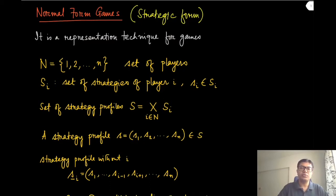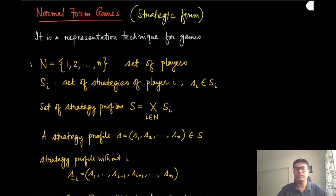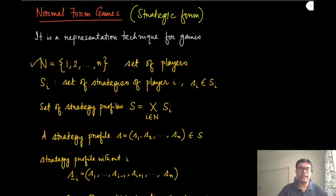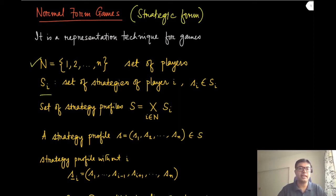Let's say we have a bunch of players, which we are going to denote by the set N. This set N enumerates all the identities of these players, and for simplicity we use numbers 1 to n to denote their identities. We will typically denote N as the set of players. Now for each player i, the set of possible strategies is denoted by capital S_i, and one specific strategy in that set is denoted by lowercase s_i.